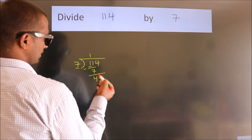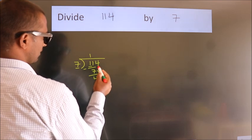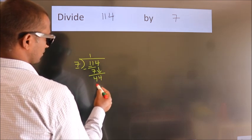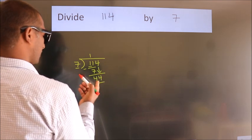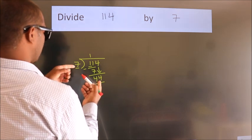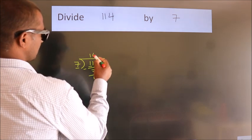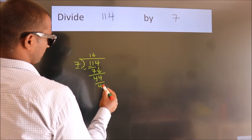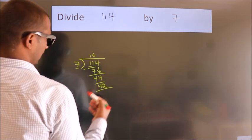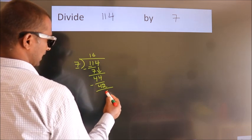After this, bring down the next number, 4. So 44. A number close to 44 in the 7 table is 7 times 6, which is 42. Now we subtract and get 2.